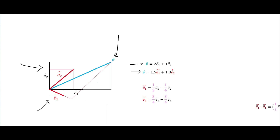We can express the ẽ (e-tilde) basis vectors in terms of the orthonormal basis. ẽ₁ is one-third of e₁ and one-fourth of e₂, and ẽ₂ is three-fourths of e₁ and three-fourths of e₂. From this we want to generate a metric tensor for these new bases.